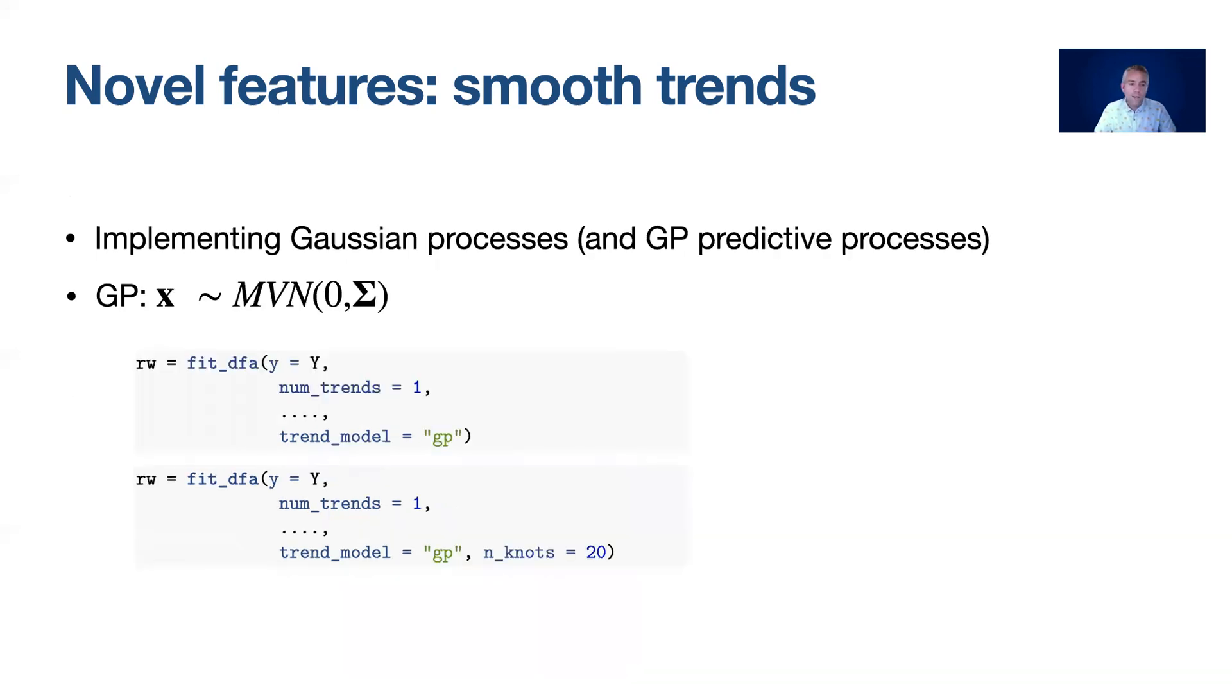Similarly with Gaussian processes we can specify that the trend model is a Gaussian process by specifying that trend_model argument equals GP and again like with the basis splines we can specify the number of knots which results in different levels of wiggliness of that smooth function.